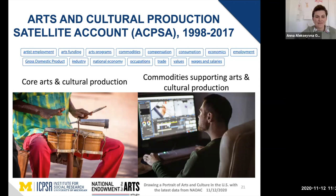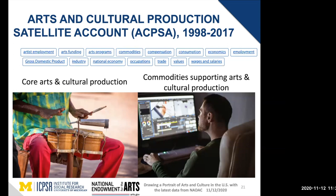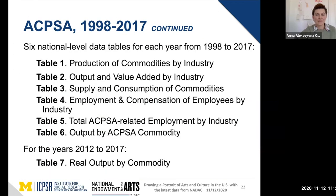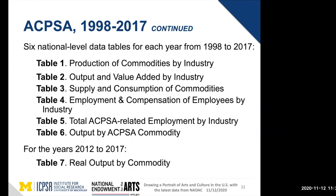The ACPSA is a series of Excel tables. The goal of these data is to demonstrate the arts and culture contribution to the economy — specifically the production of various types of art and cultural institutions to the overall gross domestic product.